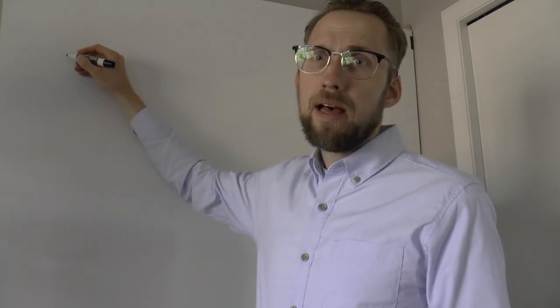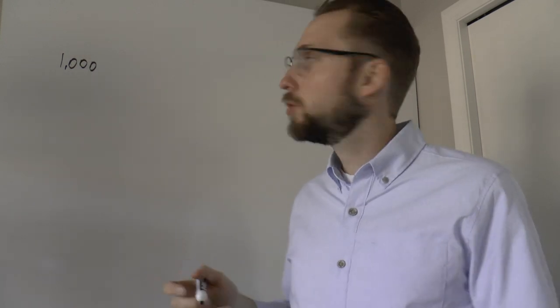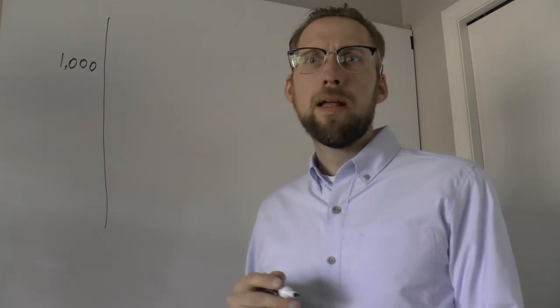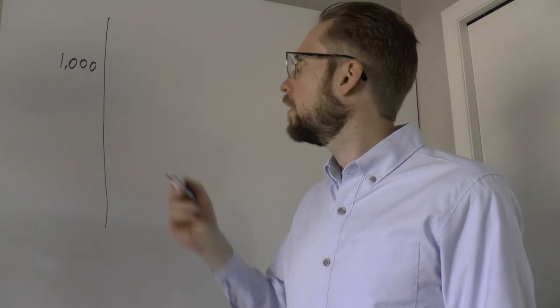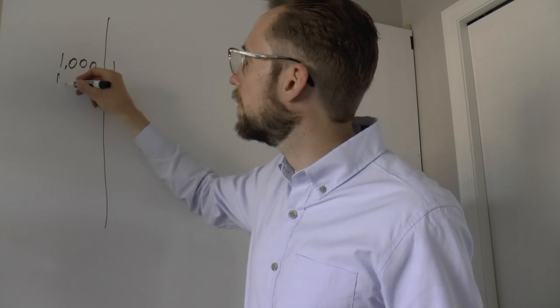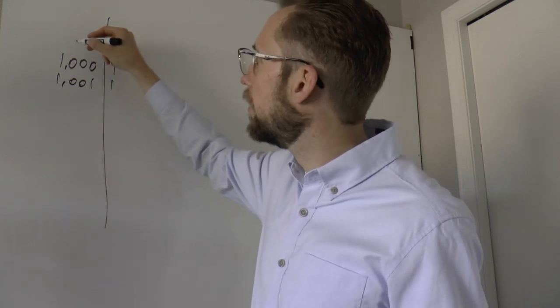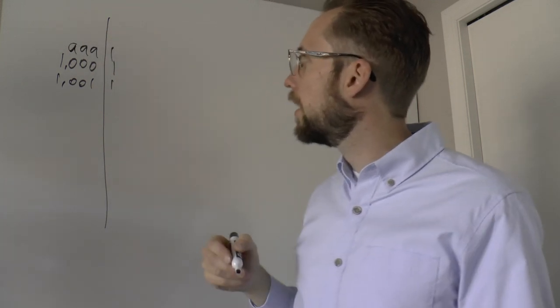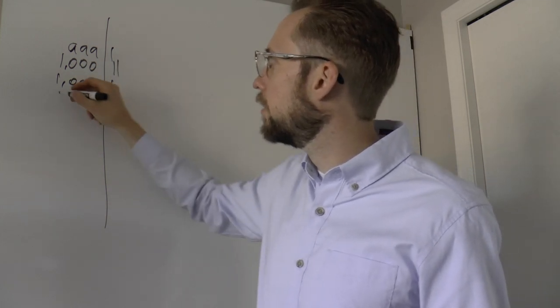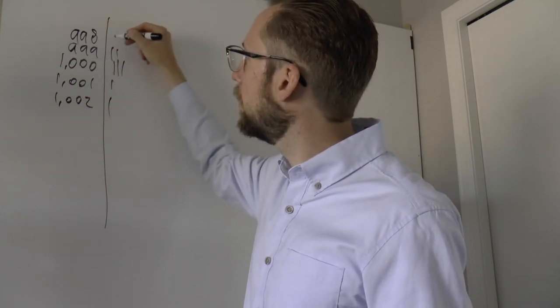I'm going to write down all those observations. I measure one carton: 1000 milliliters — that's what a one-liter carton should hold. I measure the next one: 1001 milliliters. I have one of those. Next: 999 milliliters, one of those. Then 1000 again, then 1002, then another 1000, another 999, another 998.